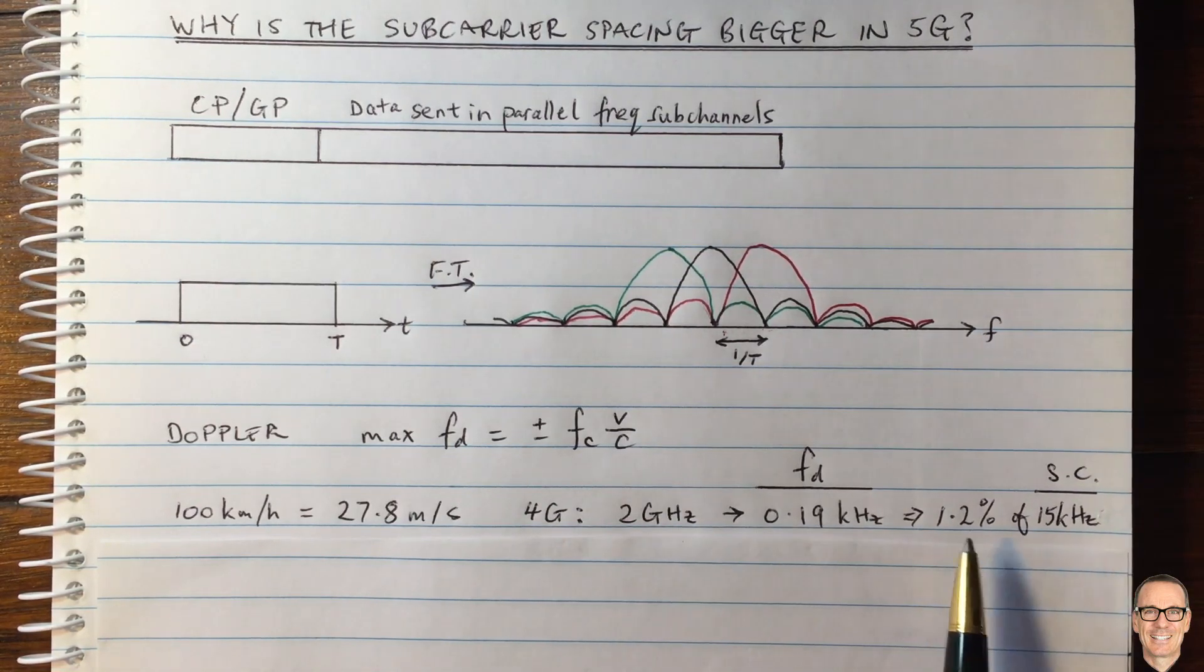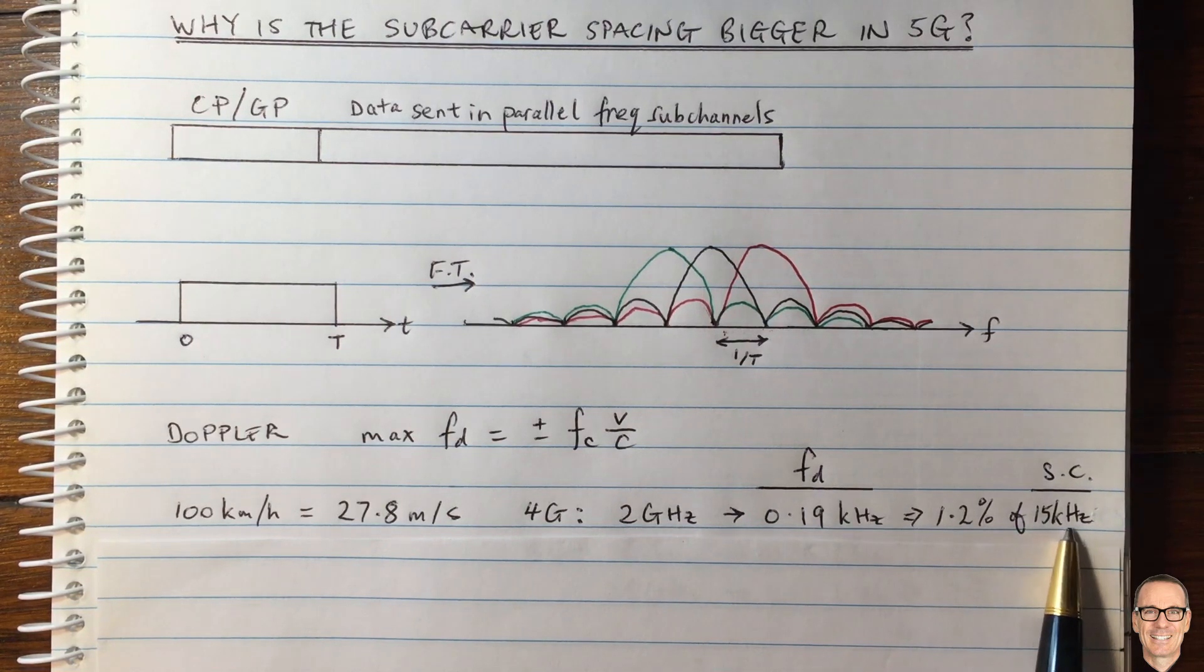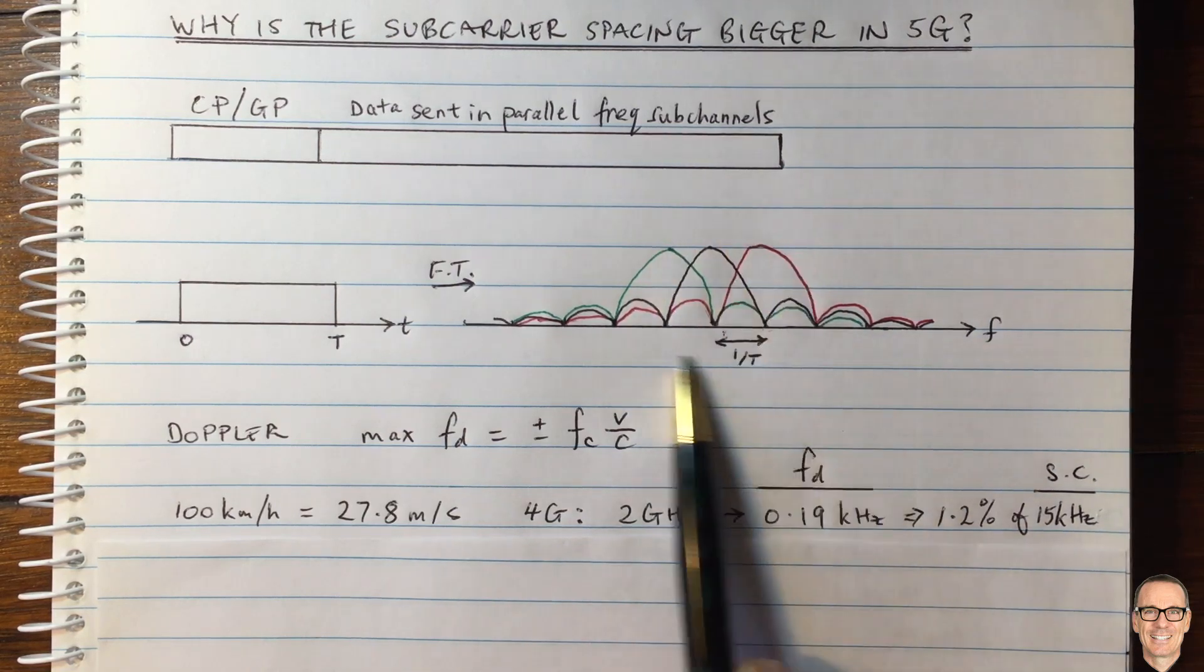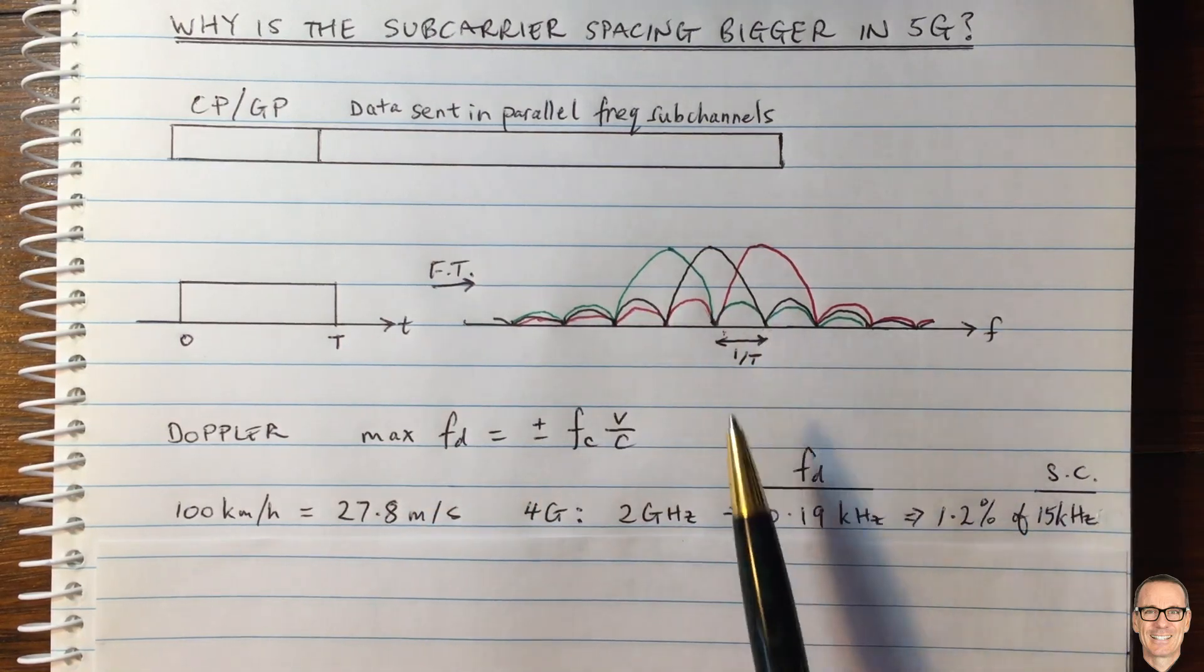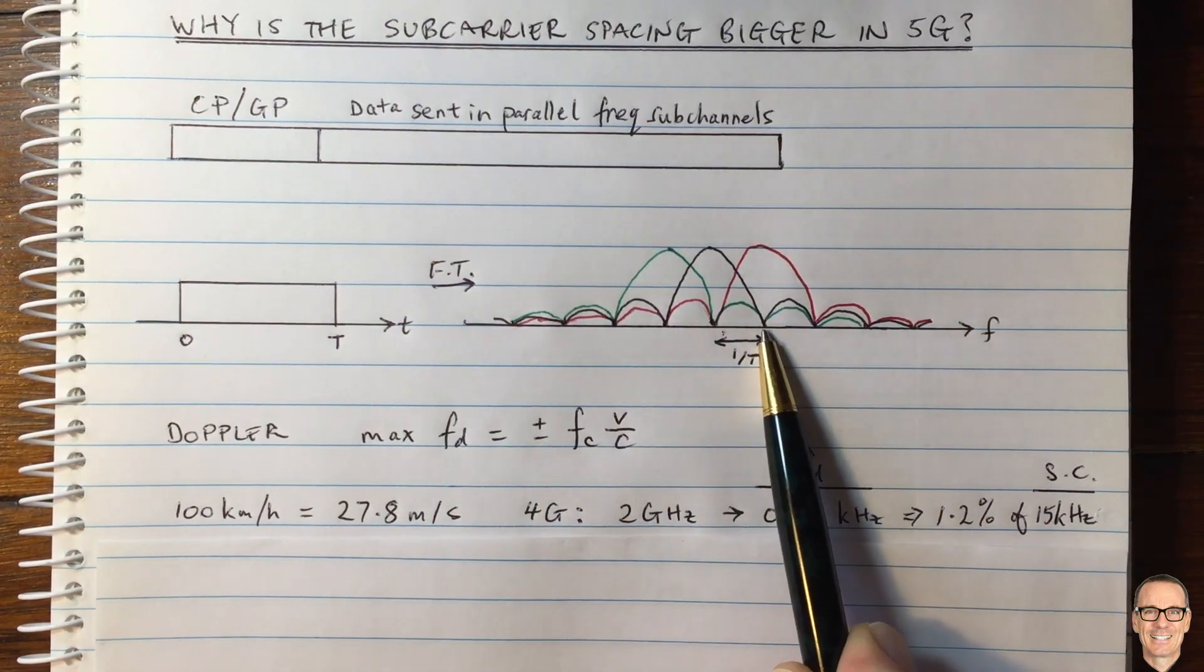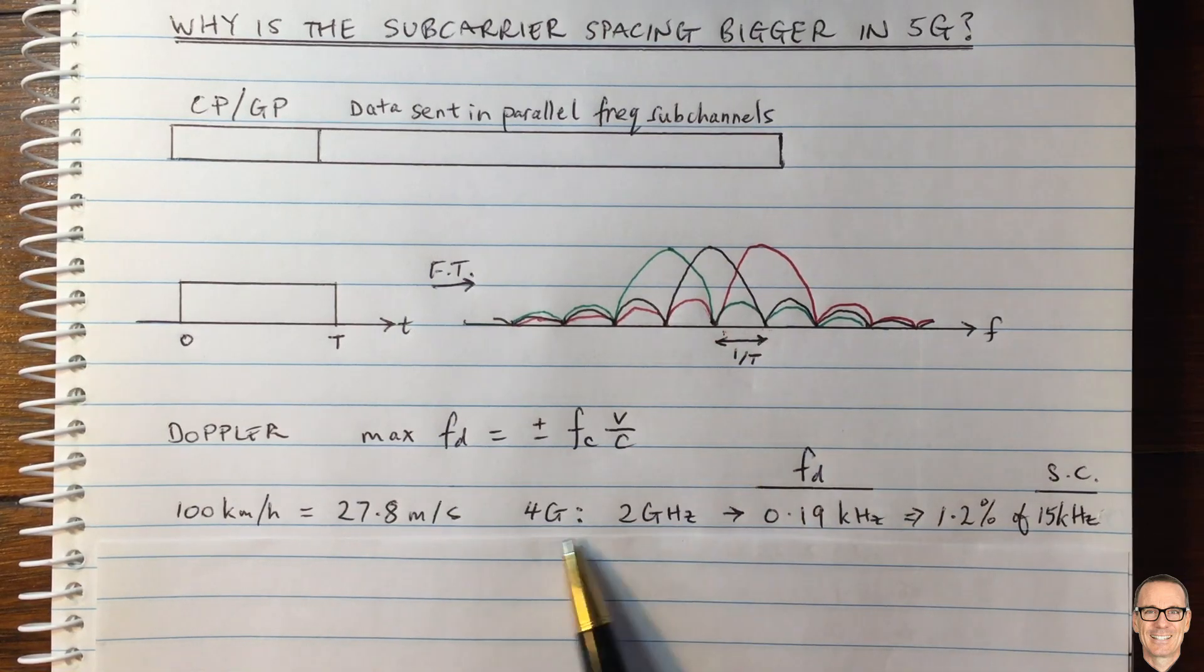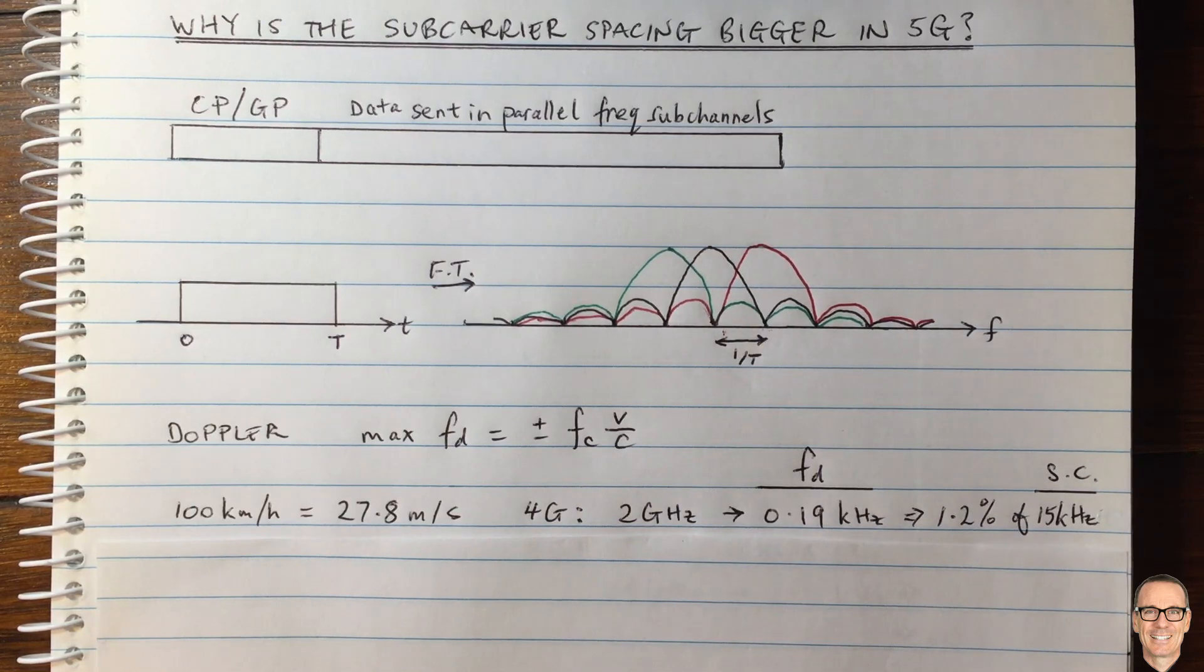So this Doppler shift corresponds to 1.2% of one of those sub-channels. So what that means is if we look at this picture here, these sub-channels are going to be spread out by an extra 1.2% beyond the 1 divided by capital T. So in the case of 4G in these scenarios here, 1.2% is not very much.